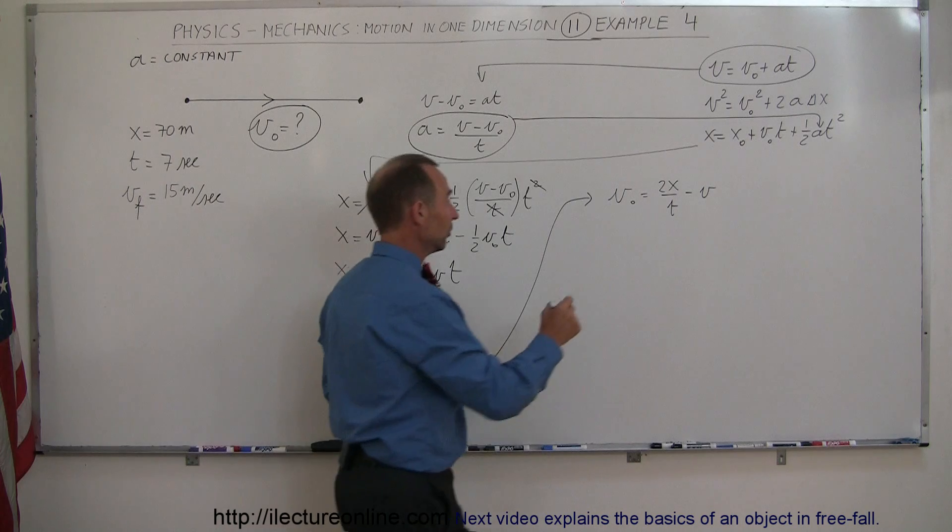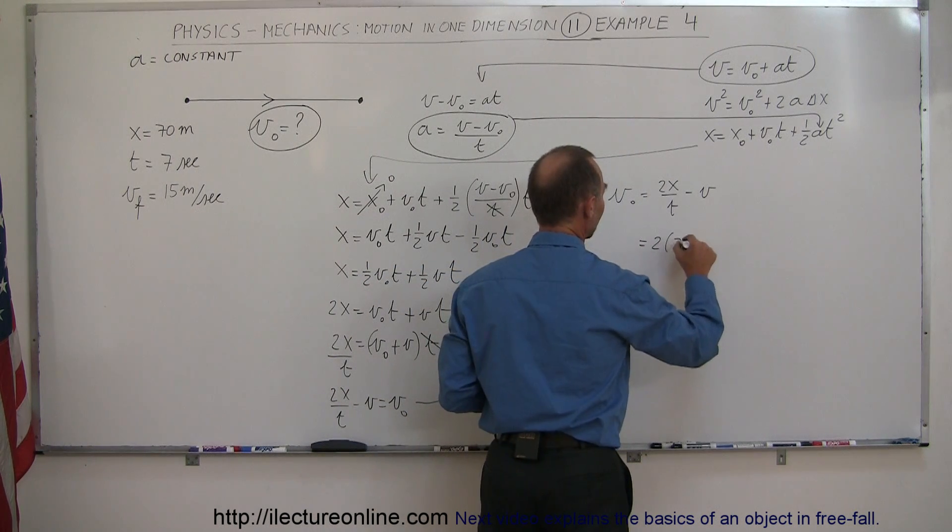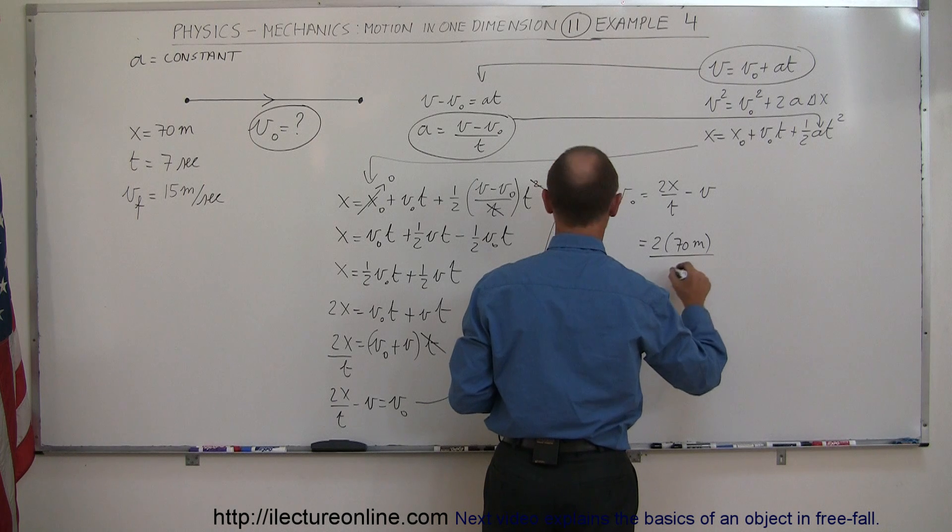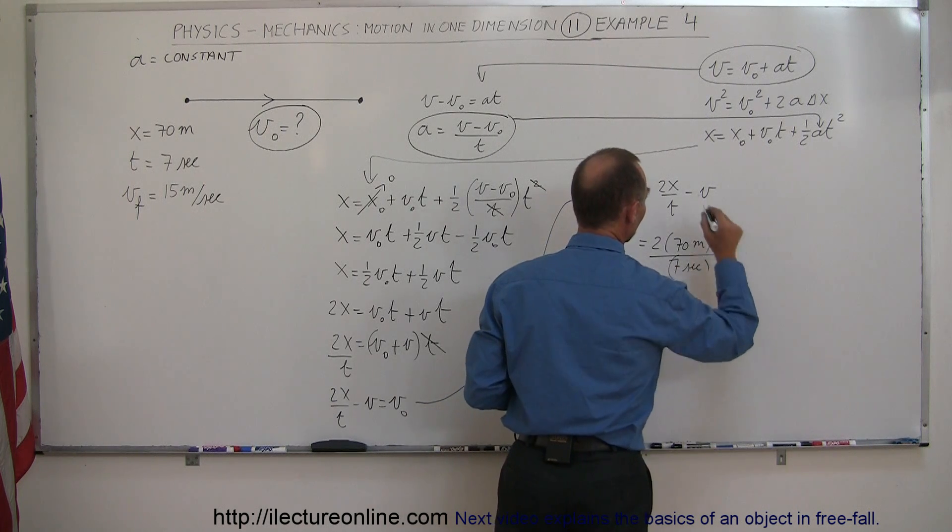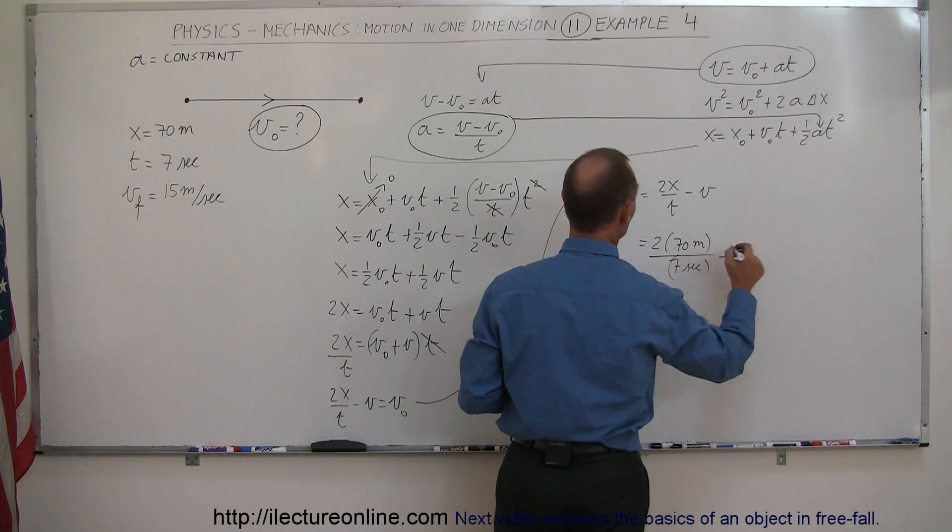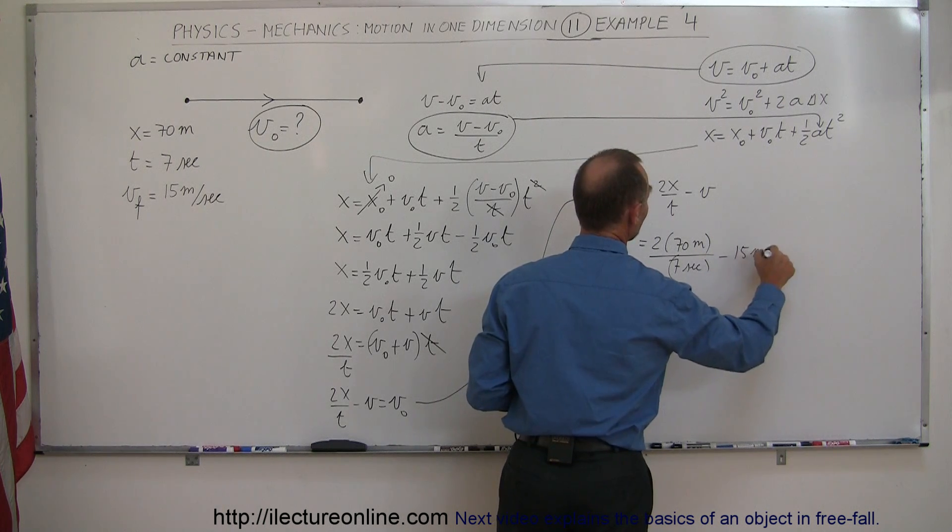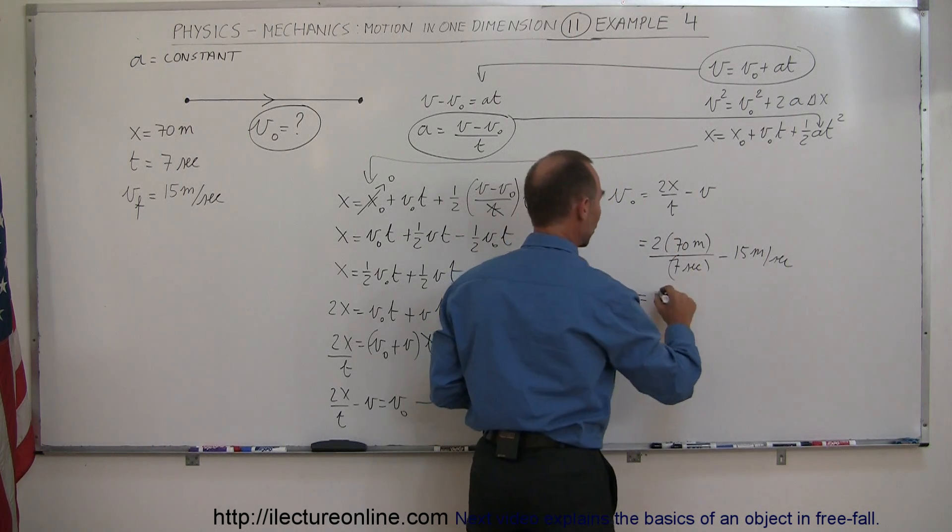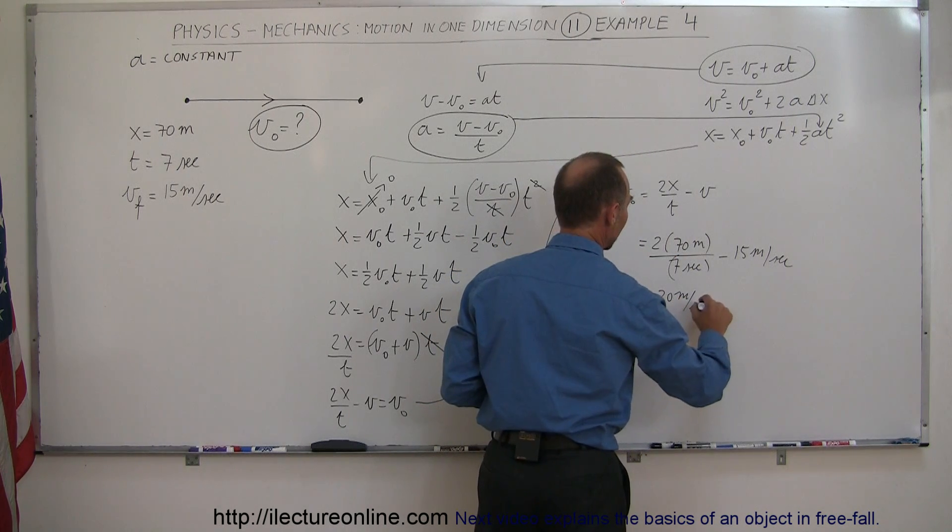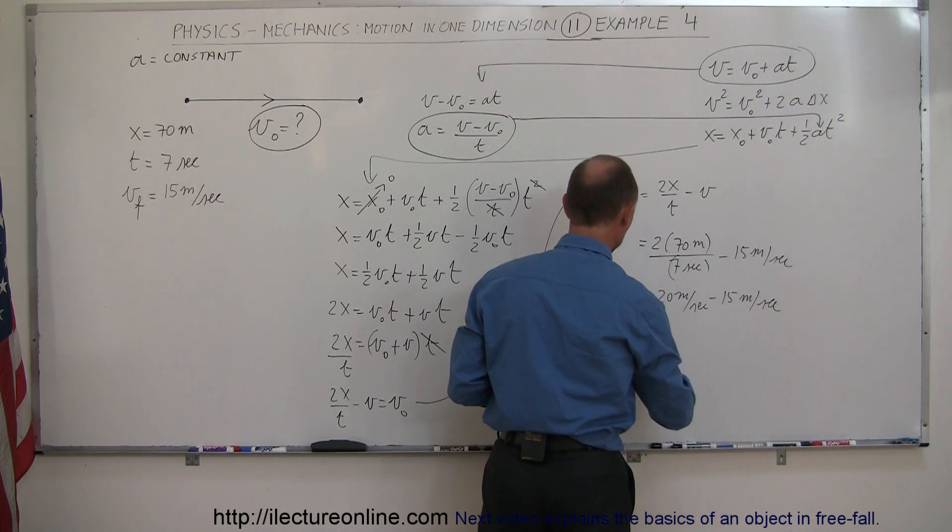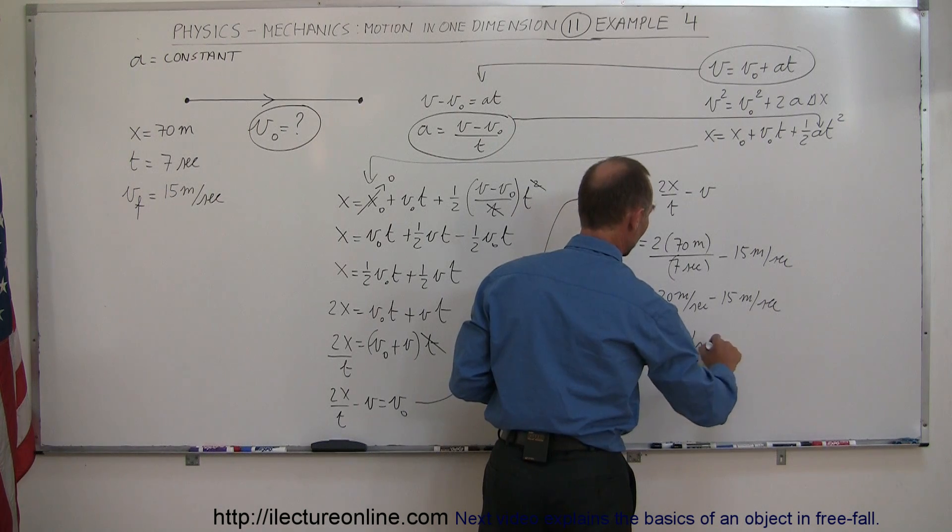X is 70 meters, so this is equal to 2 times 70 meters divided by the time of 7 seconds minus V, and V was 15 meters per second, because that's V final, minus 15 meters per second. Notice that this is 10 times 2, or 20 meters per second, minus 15 meters per second. So I can then conclude that the initial velocity must have been 5 meters per second.